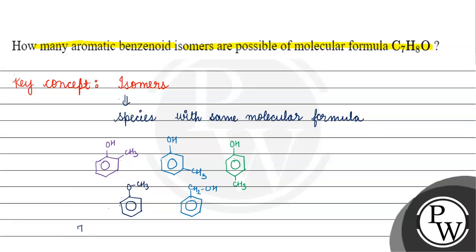The final answer for this question: how many aromatic benzenoid isomers are possible? The answer is five. I hope you understood it well. Thank you and all the best.